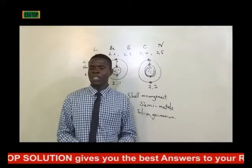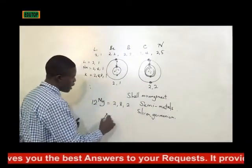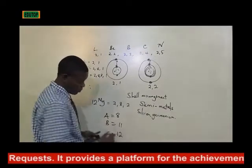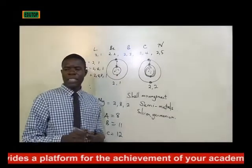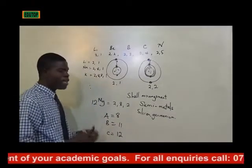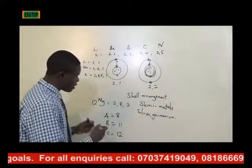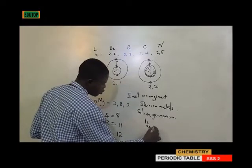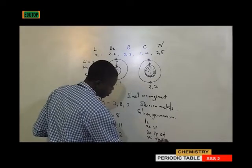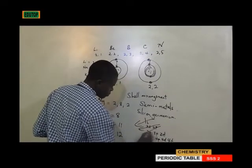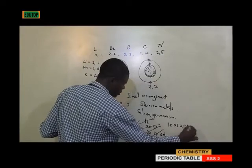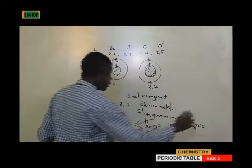Question 5: Three elements A, B, and C have atomic numbers of 8, 11, and 12 respectively. State which belong to the S-block in the periodic table. To belong to the S-block, the last electron must be in an S orbital. Using the orbital filling order — 1s, 2s, 2p, 3s, 3p, 3d, 4s, 4p, 4d, 4f — we determine the last orbital for each element based on its atomic number.